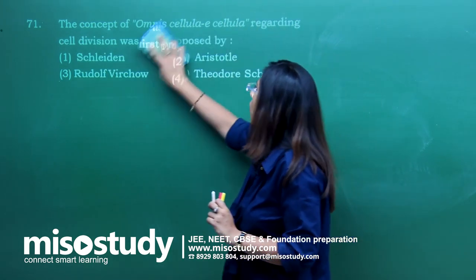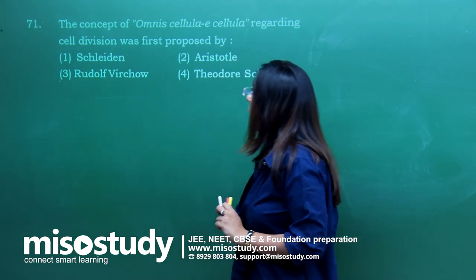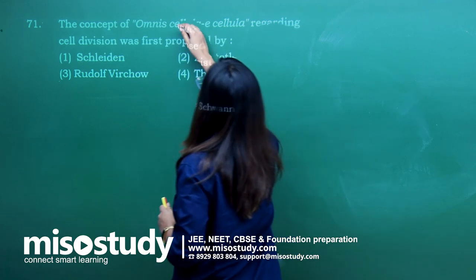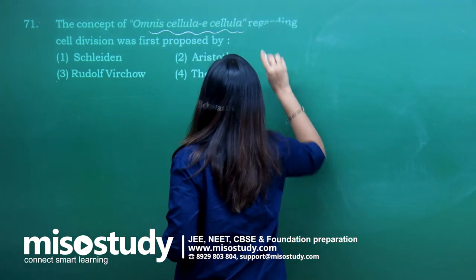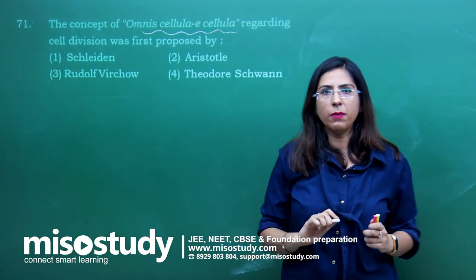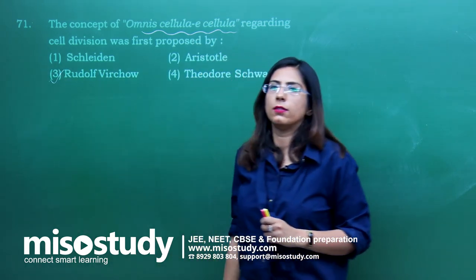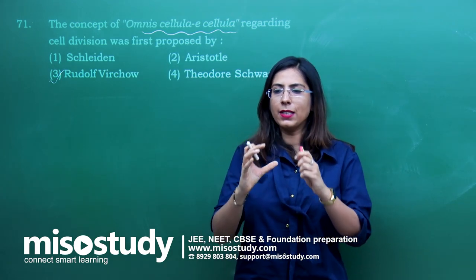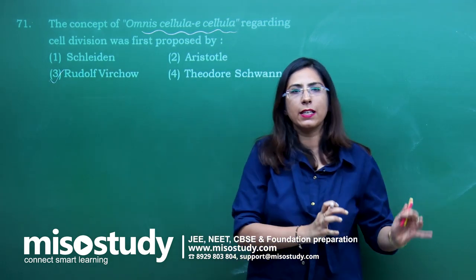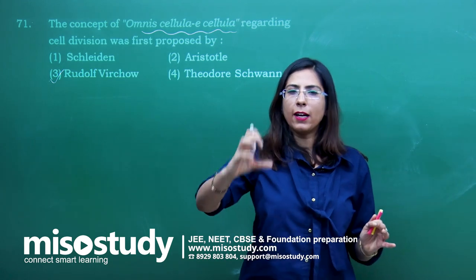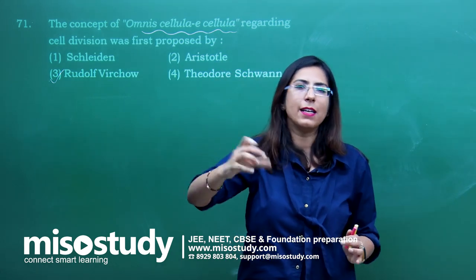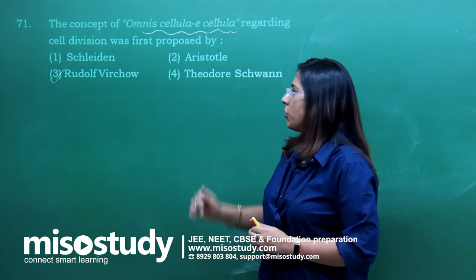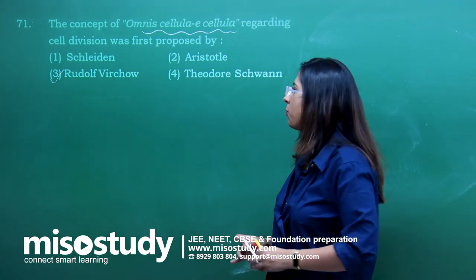Question number 71 — the concept of 'omnis cellulae a cellulae' regarding cell division was proposed by Rudolf Virchow. This means a cell arises from a pre-existing cell — whenever a cell is formed, it comes from another parent cell. The correct answer is option 3.